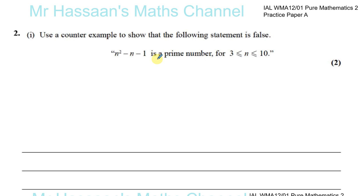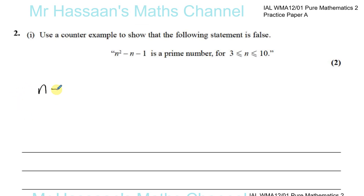Prime numbers are whole numbers, so n has to be a whole number for the result to be a whole number. We have to show by counter example, meaning we choose one value that proves this to be false. Let's start with n equals 3: 3 squared minus 3 minus 1 is 9 minus 3, which is 6 minus 1, which is 5. So this is actually a prime.